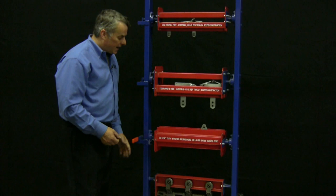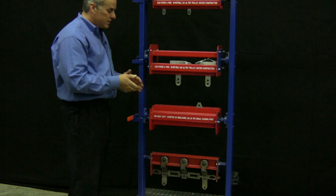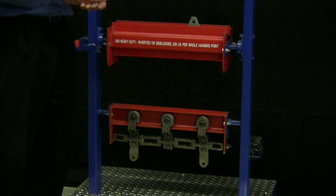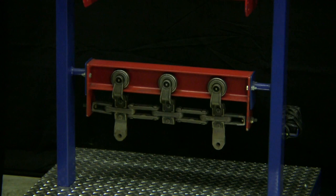The open track I-beam conveyor down below comes in 3 different capacities. It's not invertible. This is a 3-inch I-beam that we're showing here. It comes in a 4-inch variety and a 6-inch variety. The 3-inch has a capacity of 200 pounds per hanging point.